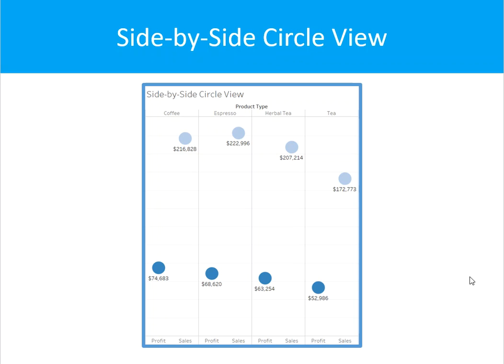A side by side circle view is similar to the circle view, but here we can compare measures such as profit and sales using circles or other shapes within specific categories. Minimum requirements are one or more dimensions, one or more measures, and requires at least three fields in order to create that view.